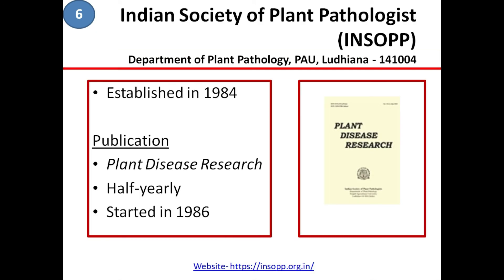Next comes Indian Society of Plant Pathologists. This society is based in Department of Plant Pathology, Punjab Agricultural University, Ludhiana. This society was established in the year 1984. Their publication is Plant Disease Research, which is published half yearly — that means two issues in one year — and this journal started in the year 1986.